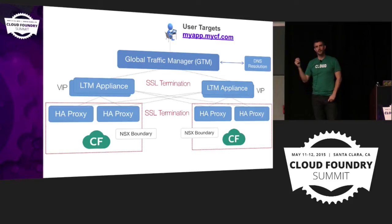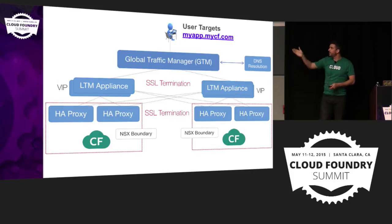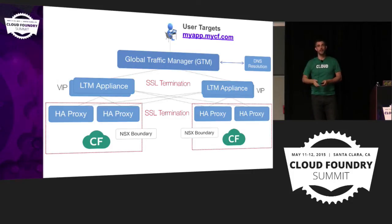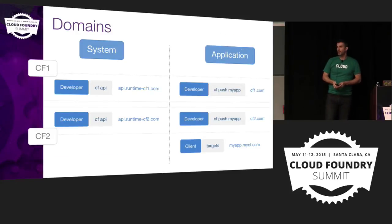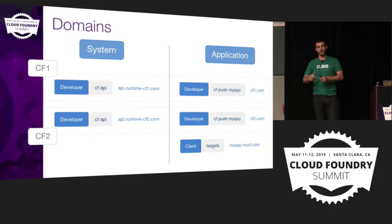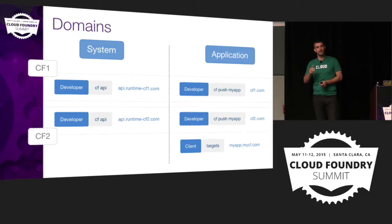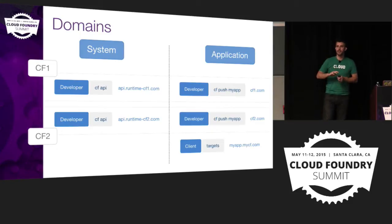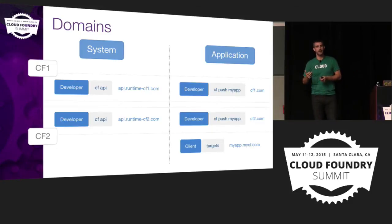We had certs for both data centers at the LTM layer, so that if you couldn't hit one Cloud Foundry instance, you could still route traffic to the other data center. We always advocate having two different domains — one for system and one for applications — so developers can't register apps like UAA and Cloud Controller. Because we had two Cloud Foundry installations, developers could target a specific foundation, so we ended up with four domains: two system and two application, one for each data center, plus a generic domain for end users.